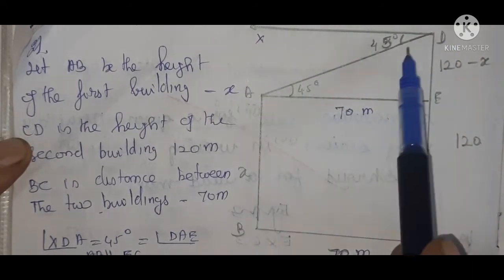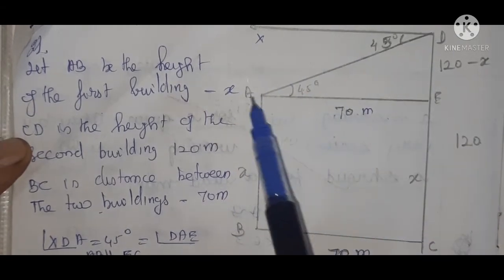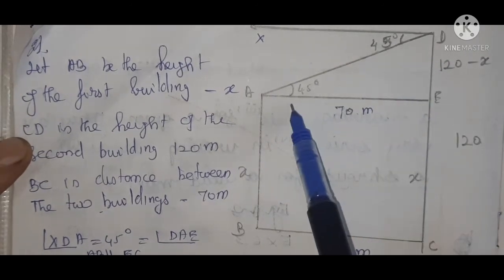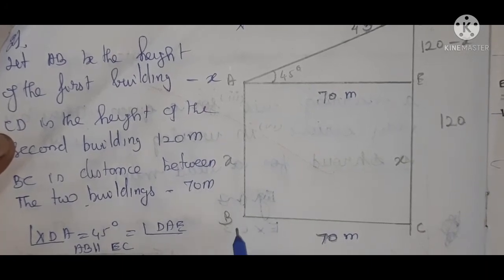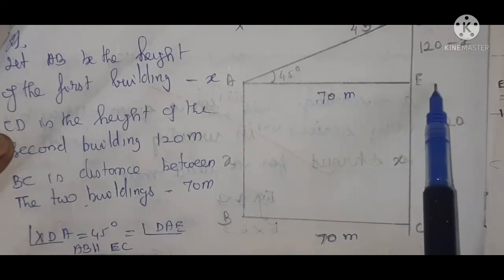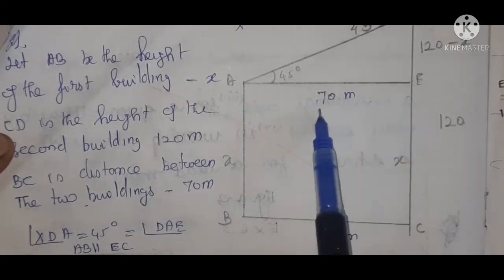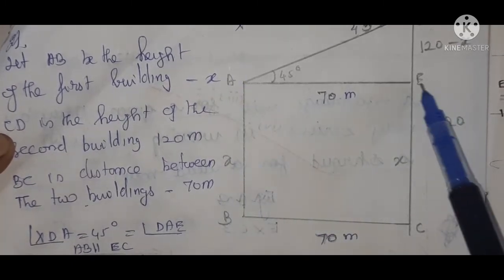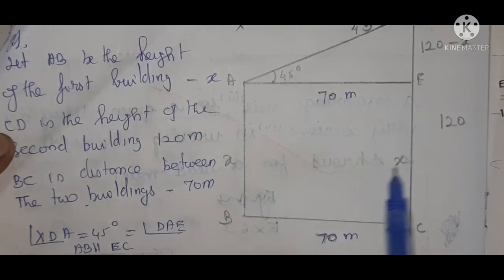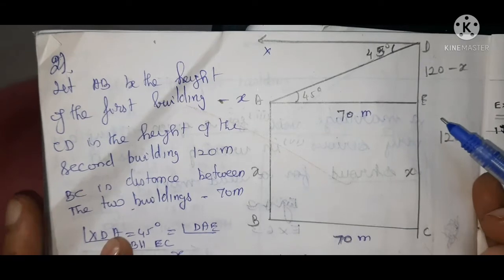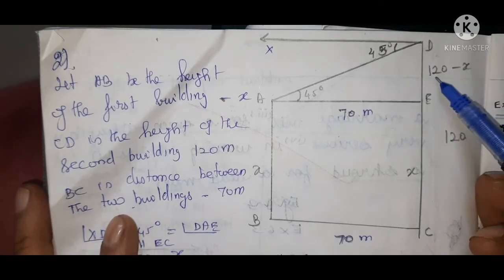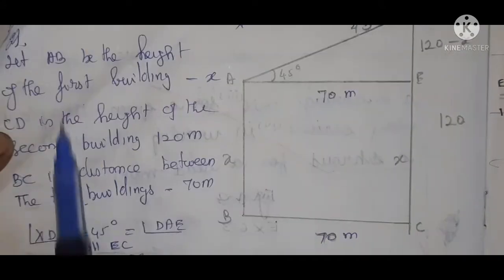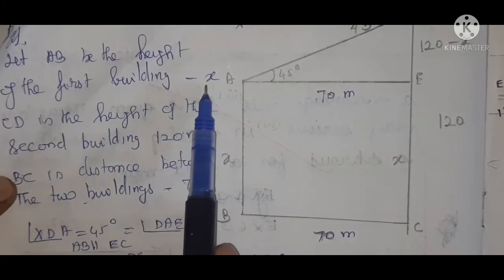From the top of the second building, the top of the first building is seen at angle of depression 45°, so angle XDA = 45°. XD is parallel to AE, and AD is the transversal, so alternate angles are equal: angle DAE = 45°. The distance between the two buildings is 70 meters. AB is parallel to EC and equal, so EC = x. AE is parallel to BC = 70 meters. DE = DC − EC = 120 − x. Let AB = height of the first building = x.